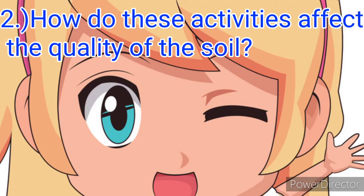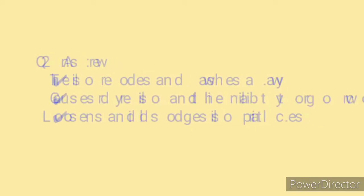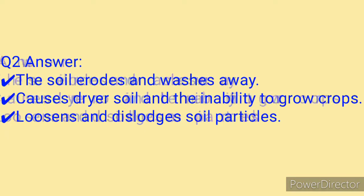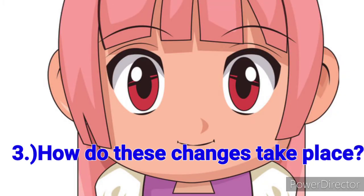Second question: how do these activities affect the quality of the soil? Because of deforestation, the soil erodes and washes away. It also causes drier soil and the inability to grow crops, then loosens and dislodges soil particles.